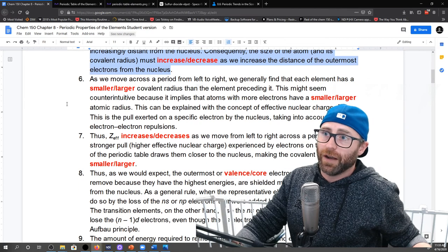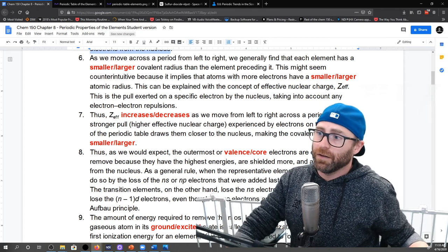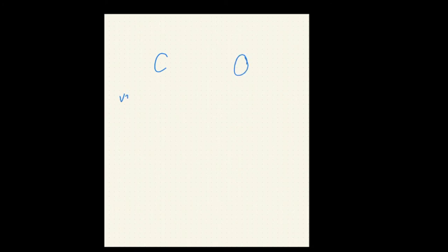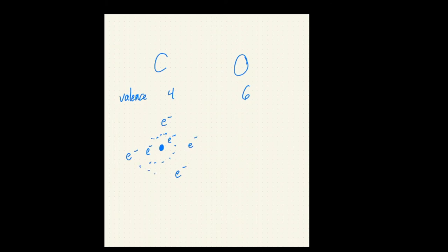The reason number six might feel counterintuitive is this: if we go from carbon to oxygen, carbon's valence electrons are 4, oxygen's are 6. So you could say with carbon you have 2 core electrons and then 4 valence electrons. For oxygen it's pretty much the same except you're going to have 2 more electrons in the valence shell. If we use the logic that more electrons equals bigger atom, then we'd think oxygen is bigger.